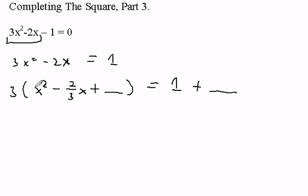Now I find the magic number in the usual way. I'm completing the square on these two terms. So I take one half of negative 2 thirds. I'll do it here. I'm going to take one half of negative 2 thirds. And then I'm going to square this quantity.